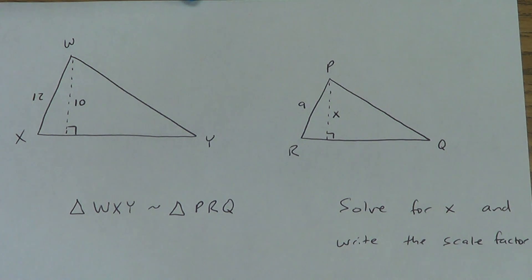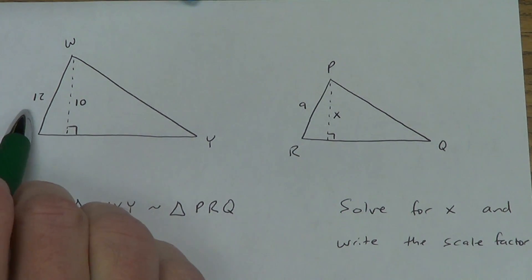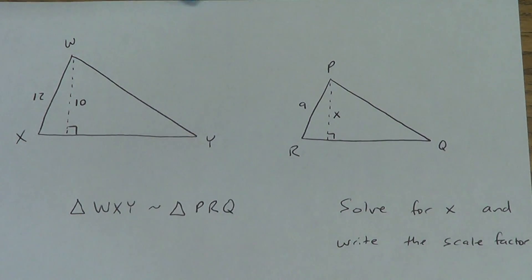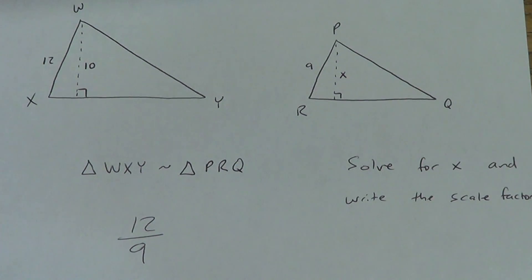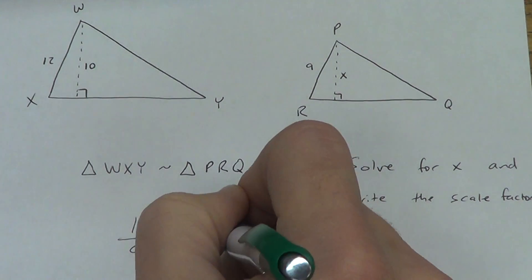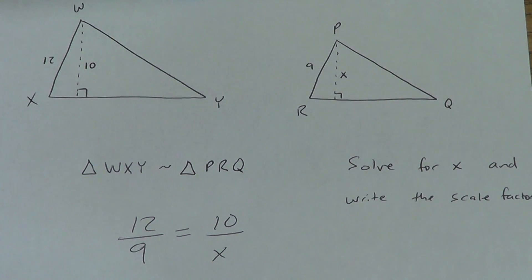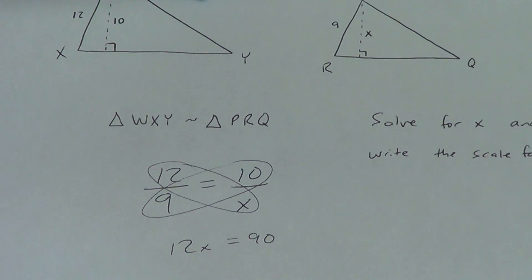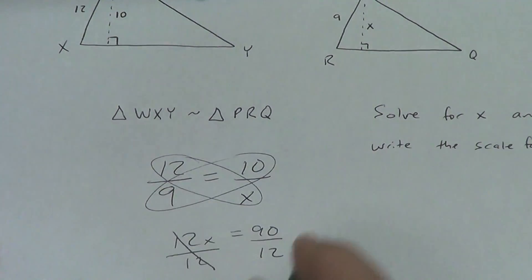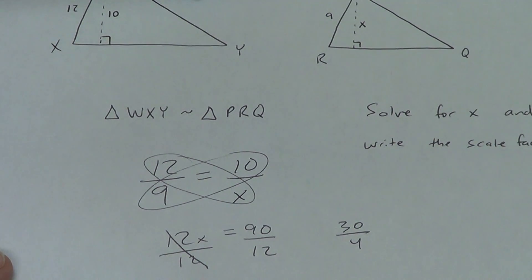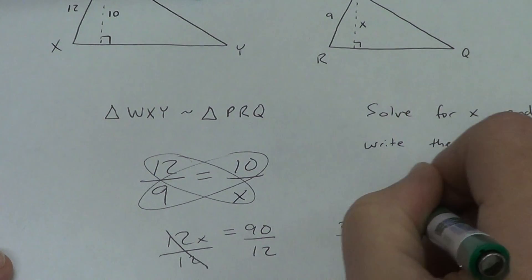You should have tried to solve for X by setting up a proportion. So, let's think about how we'd set that up. 12 goes with 9. WX goes with PR. 12 goes with 9. So, I'm going to start with that. Equals. 10 goes with X. I have to keep the 12 and the 10 in the same place in my fraction. So, I'm going to put the 10 up top. I'm going to put the X down below. We're going to cross multiply. 12X equals 90. I'm going to divide by 12. We're not going to go to decimals. So, I'm going to reduce this. It's divisible by 3. That would give me 30 over 4. I can keep reducing by 2. That gives me 15 over 2. So, X equals 15 over 2 units. And I'm done.